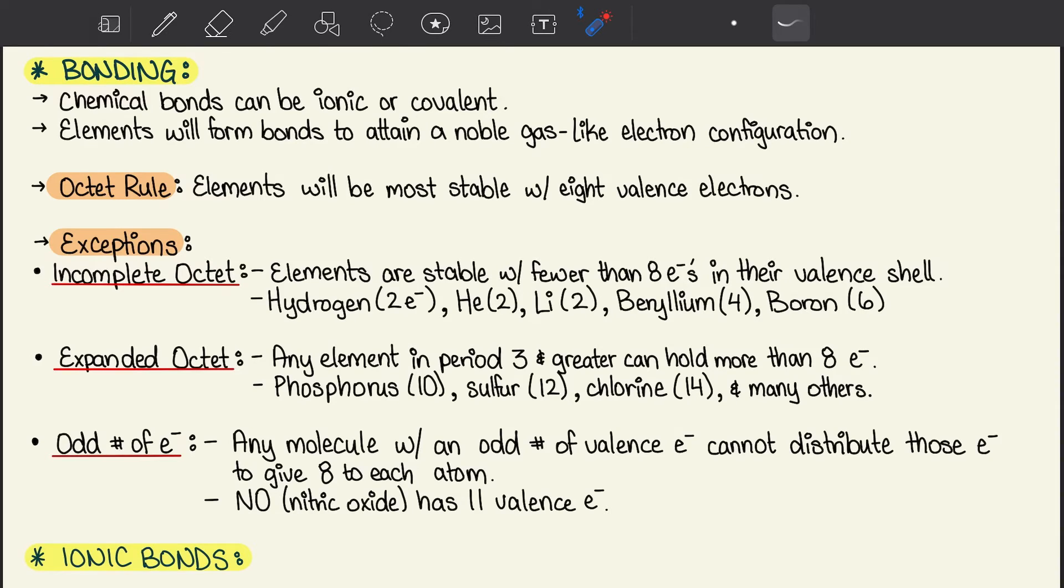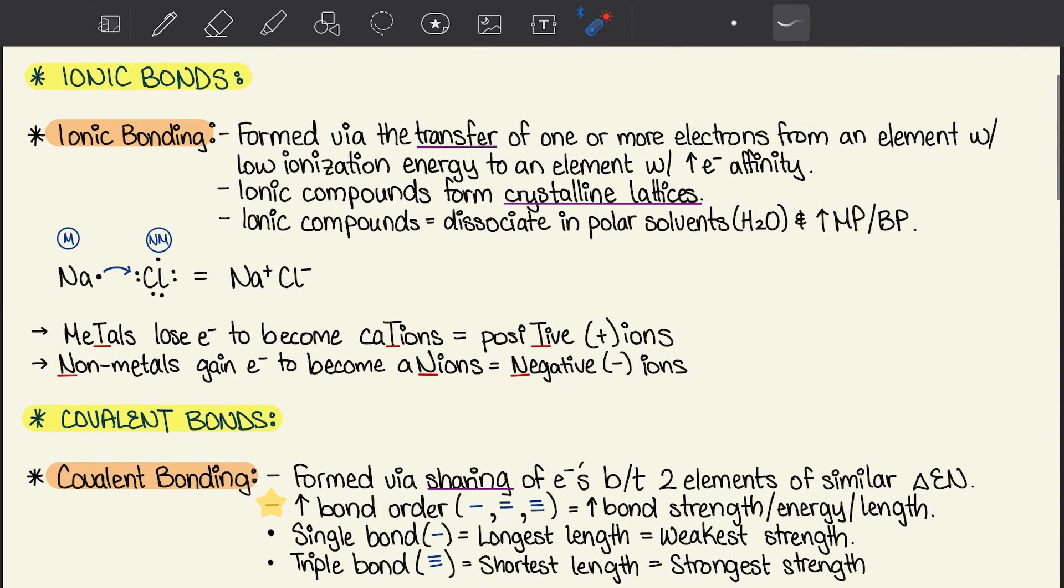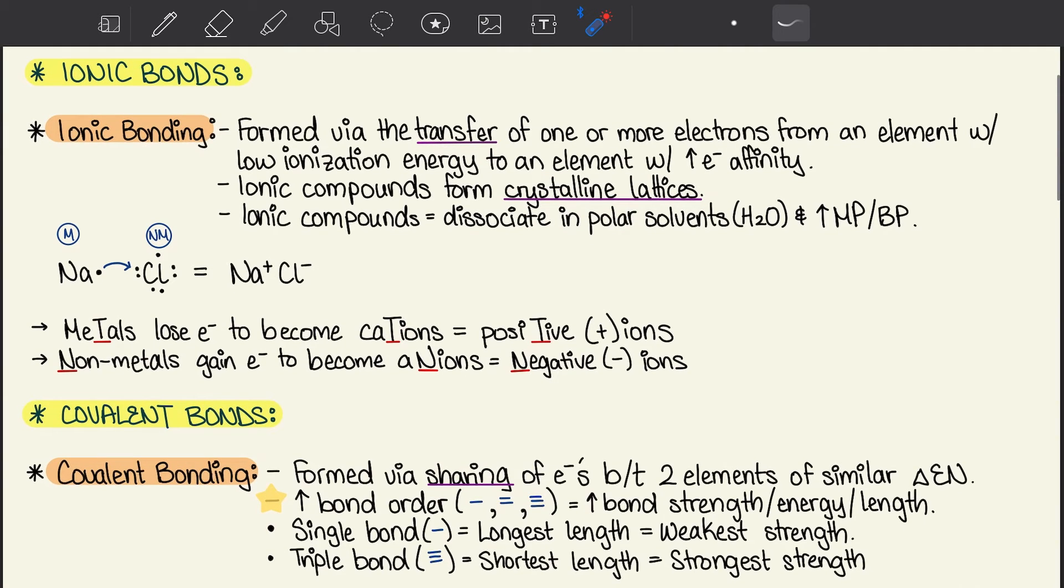We're going to move on to ionic bonds. Ionic bonding is formed via the transfer of one or more electrons from an element with low ionization energy to an element with high electron affinity. If you have issues visualizing that, I suggest you go check out chapter 2, where I summarize that table with the different periodic patterns. Ionic compounds form crystalline lattice structures and dissociate in polar solvents like water and have high melting and boiling points.